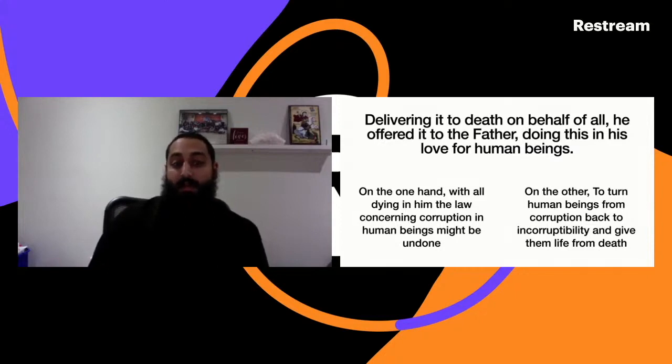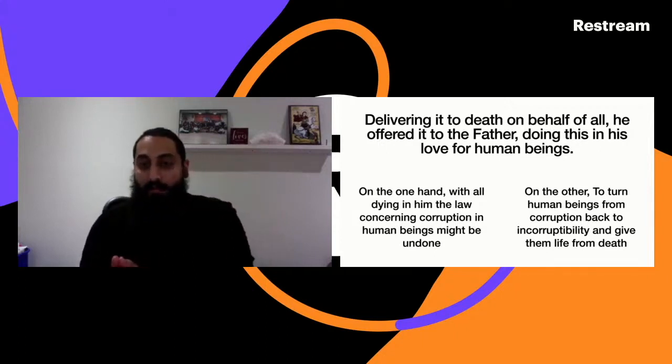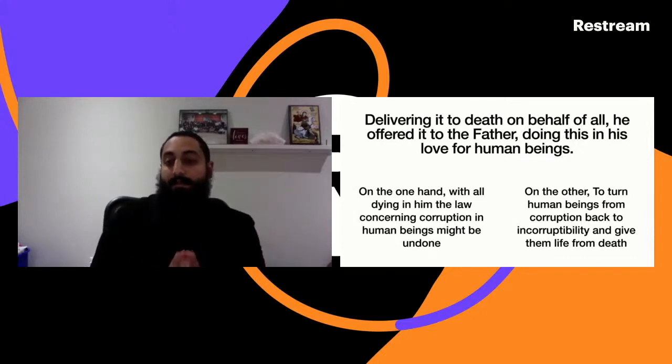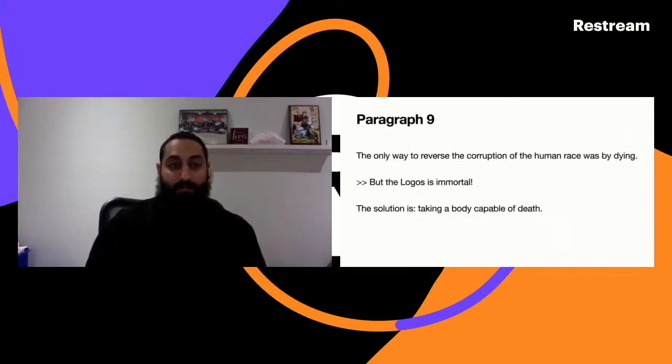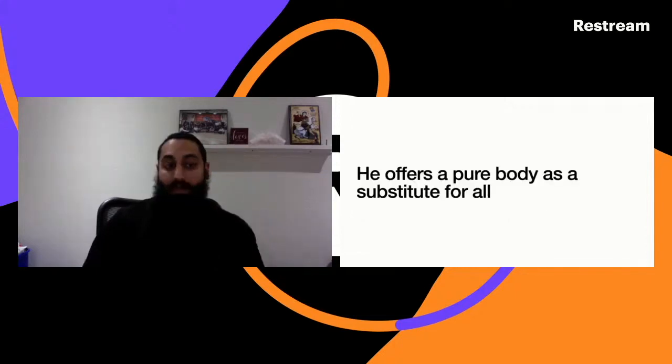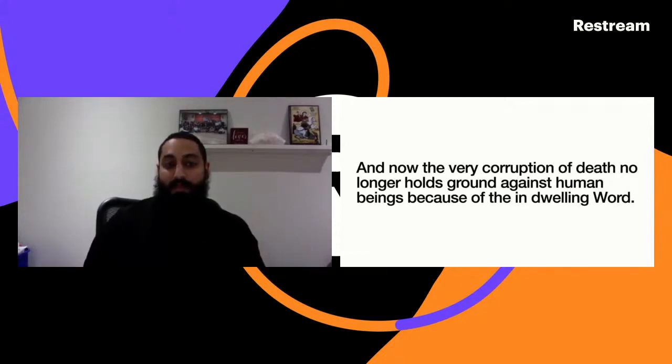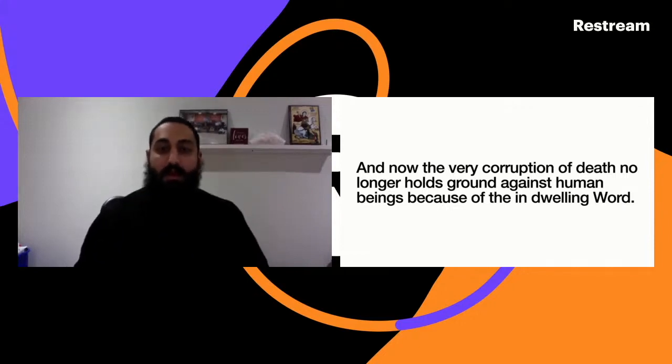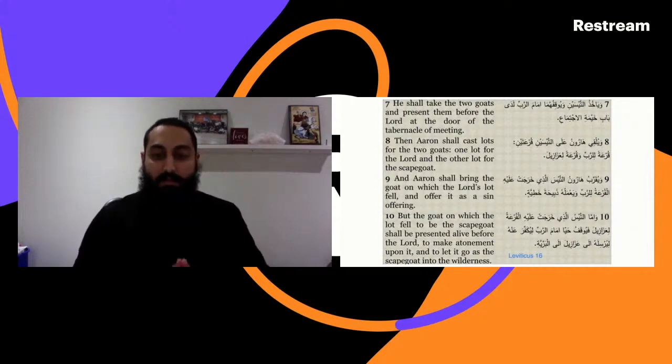On the one hand, with all dying in Him, the law concerning corruption in human beings might be - we spoke about the verse Genesis 2:17, of the day you shall eat of it you shall surely die. How does this fulfill this? By the death of Christ, all of us die in Him. And now on the other hand, to turn human beings from corruption back to incorruptibility and to give them life one more time, life from death. The only way to reverse the corruption of the human race was by dying, but God is immortal, He cannot die. This is for God to take a body capable of dying, and God offers this pure body as a substitute for all. The very corruption of death no longer holds ground against human beings because of the indwelling Word.